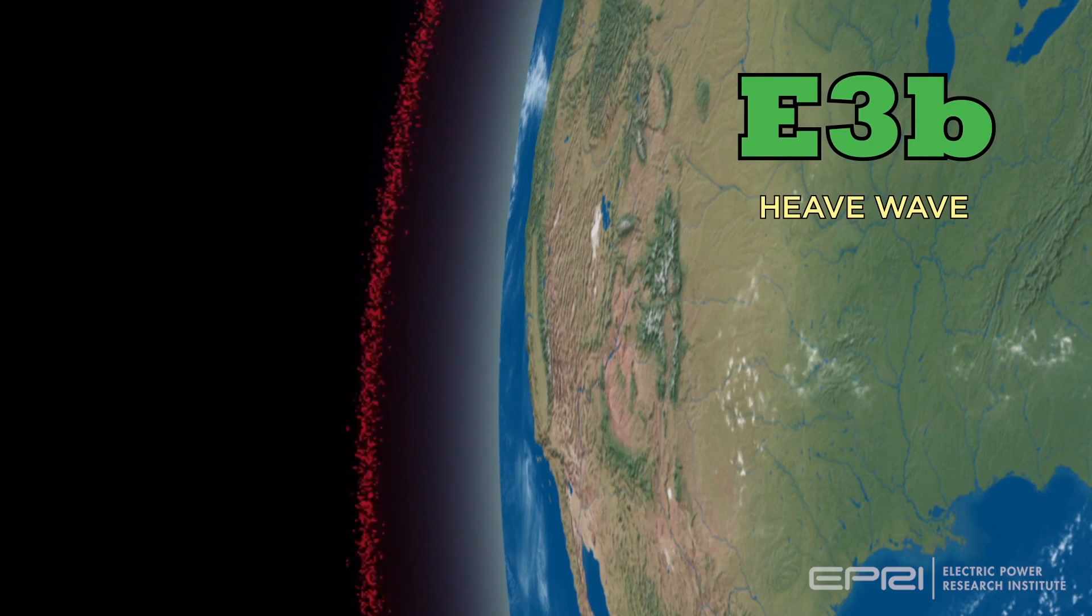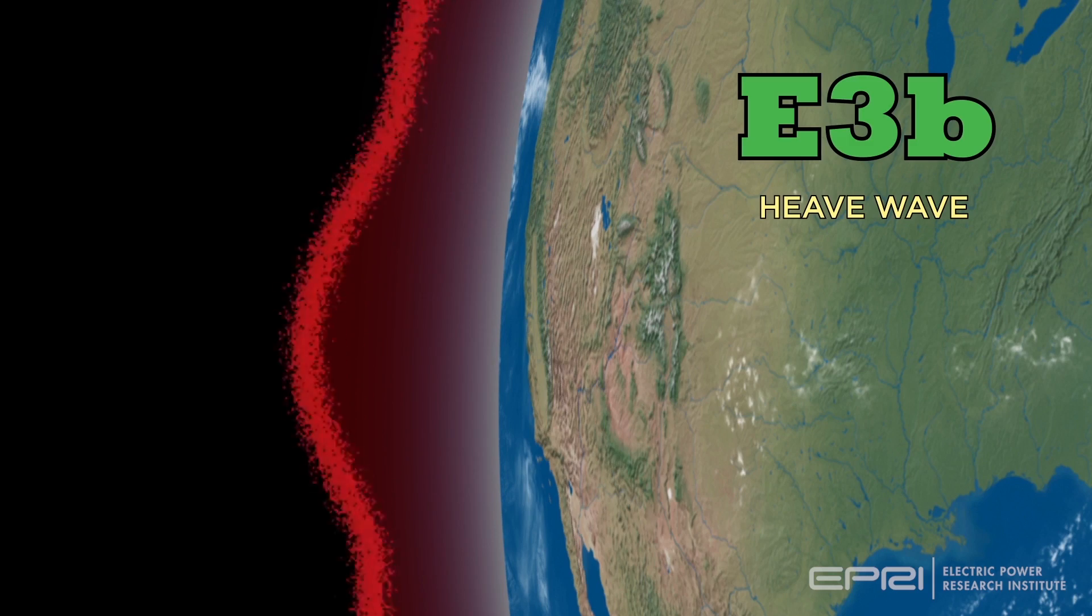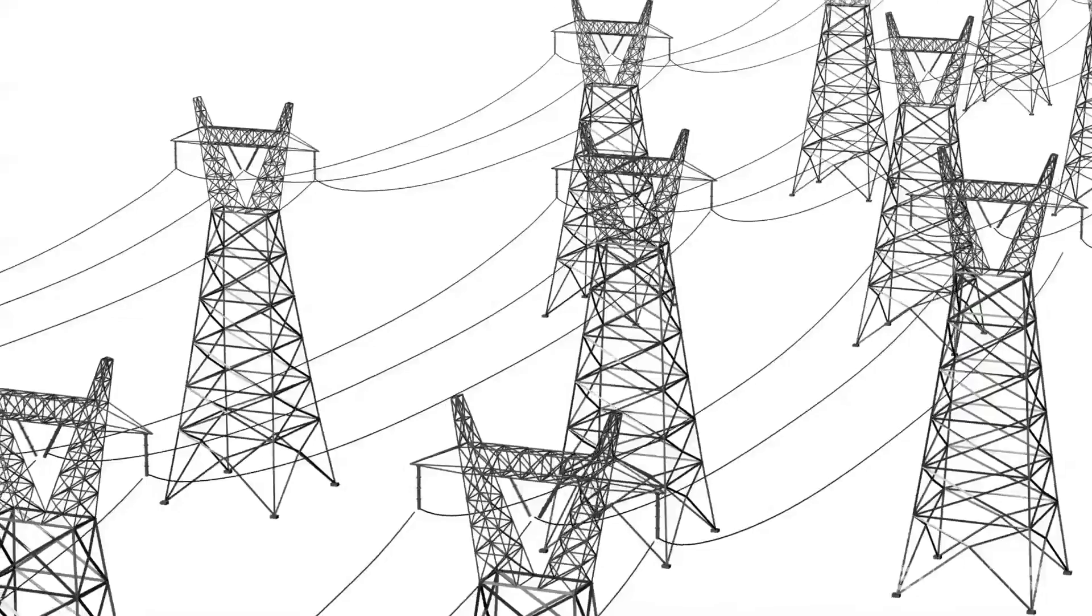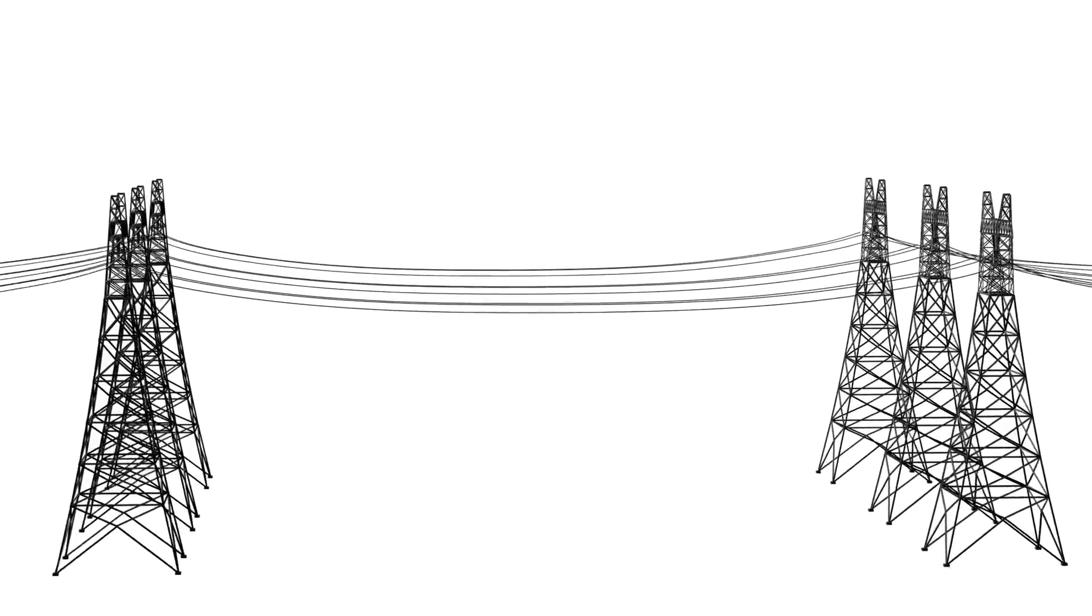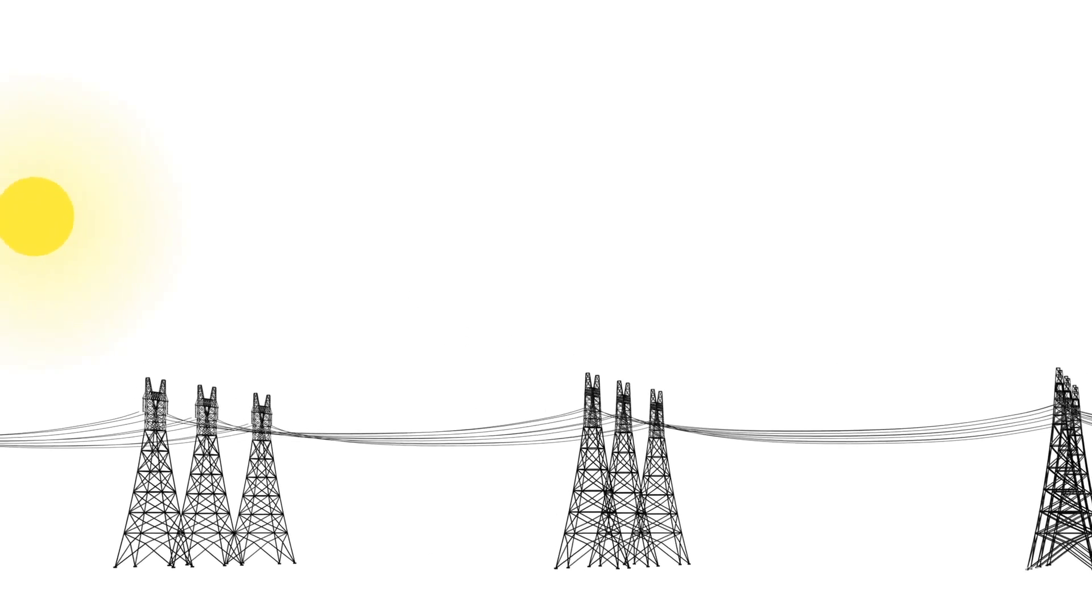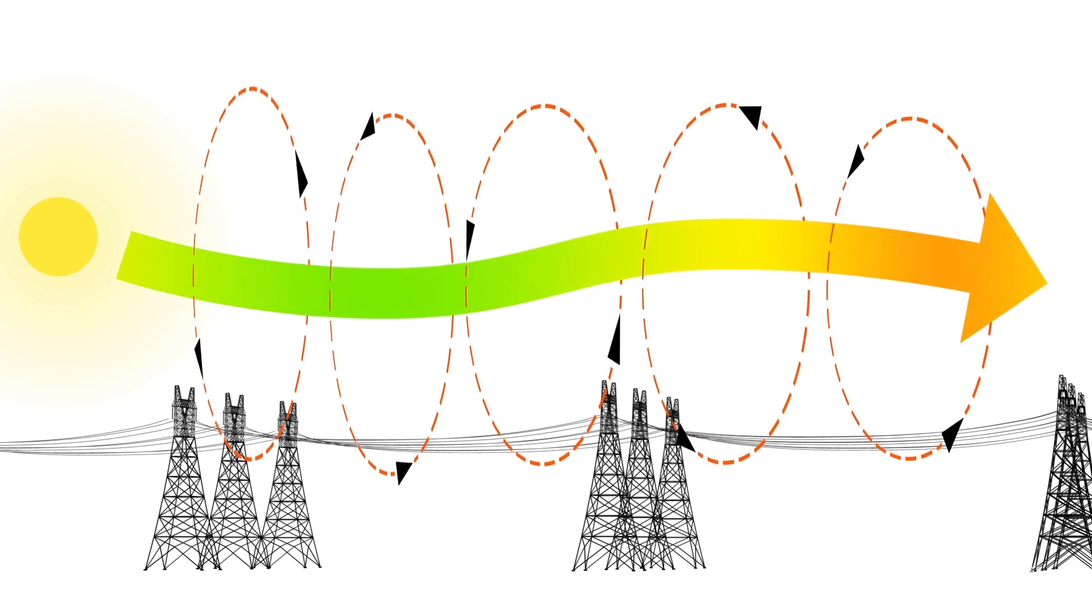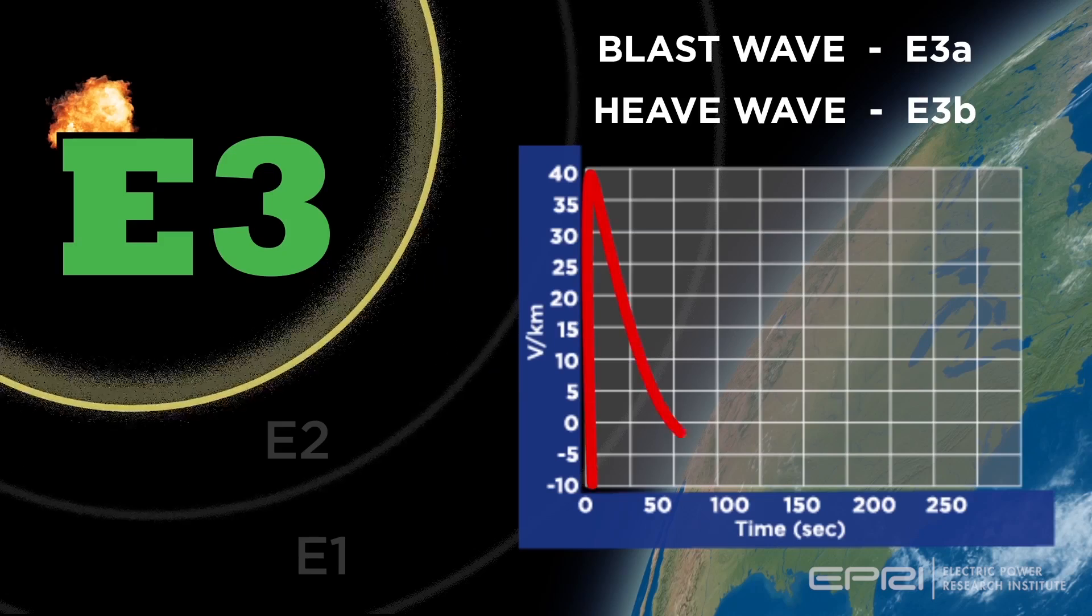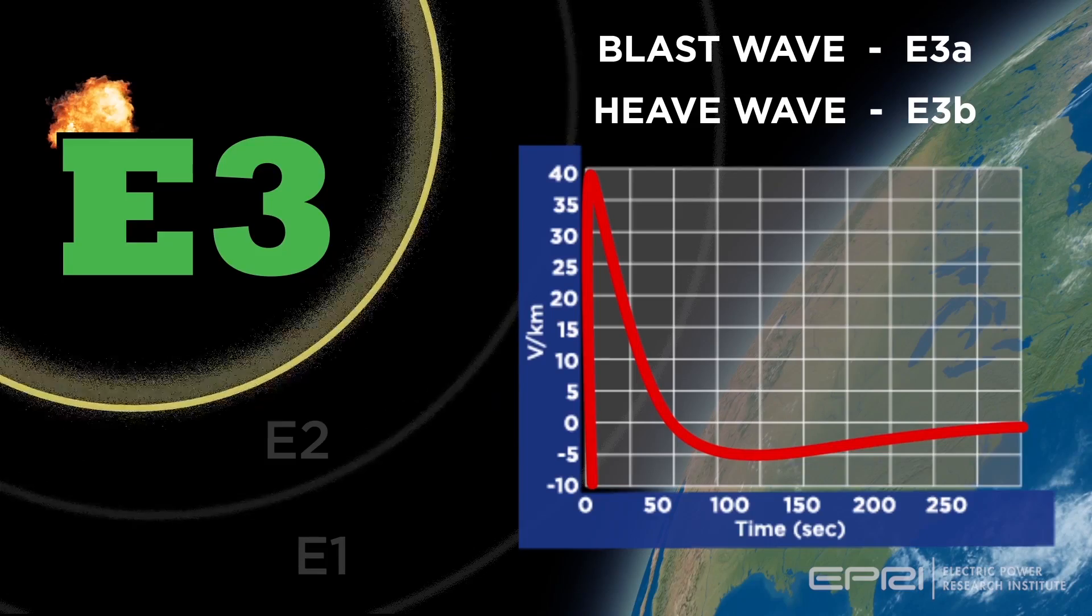The second component, the E3B heave wave, is generated by the heaving of air heated by the nuclear explosion. The change in geomagnetic field resulting from the E3A and E3B waves induces low-frequency, quasi-DC, currents in the power grid, much like those generated by a severe geomagnetic disturbance event, but are significantly larger and of much shorter duration. The total duration of the E3A and E3B signals is on the order of four to five minutes.